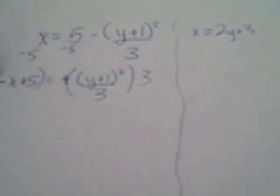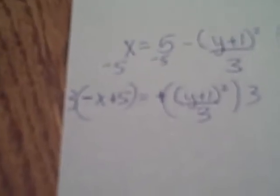Next thing we've got going on that's being done to y is that we're divided by 3, so to undo that we want to multiply both sides by 3. So we have 3 times negative x plus 5, negative 3x plus 15 when I distribute, equaling, and then the point over here is to get those 3's to cancel so we've got y plus 1 quantity squared.